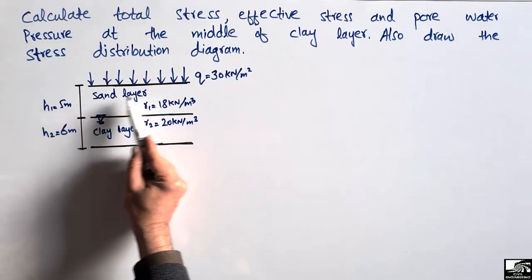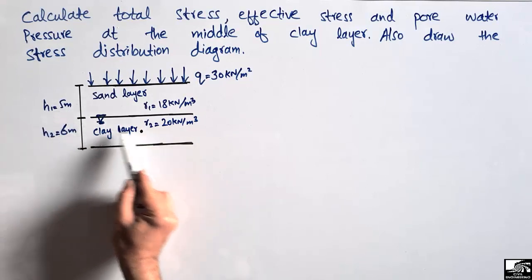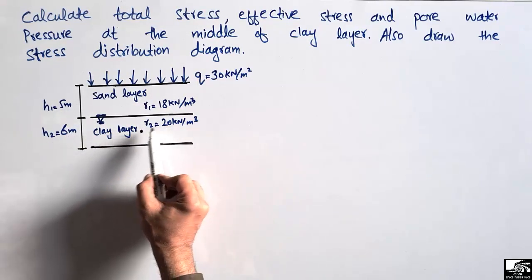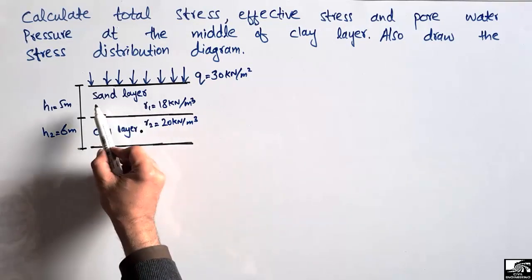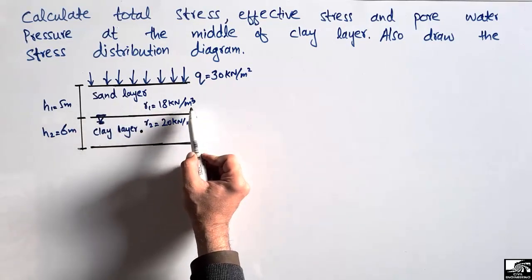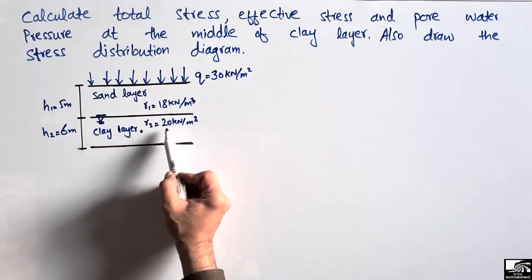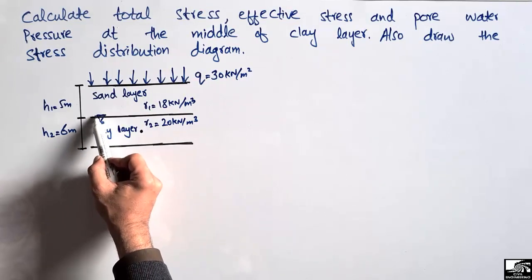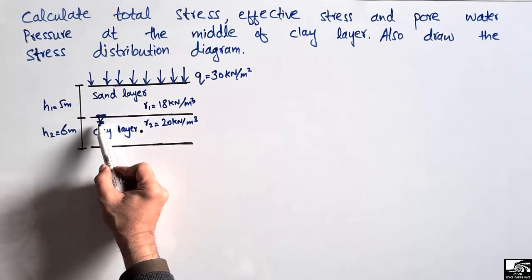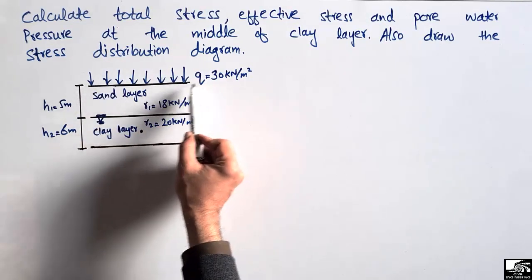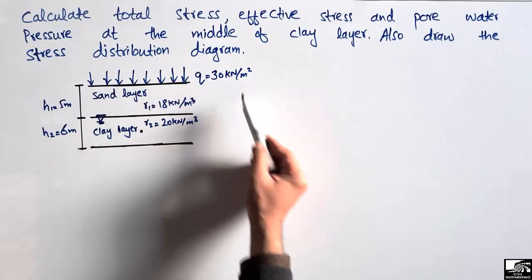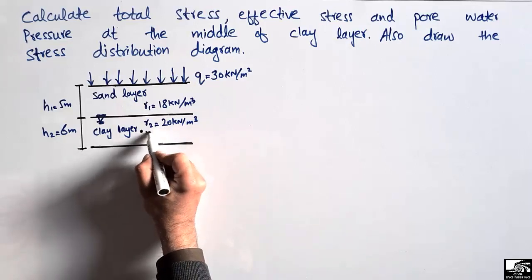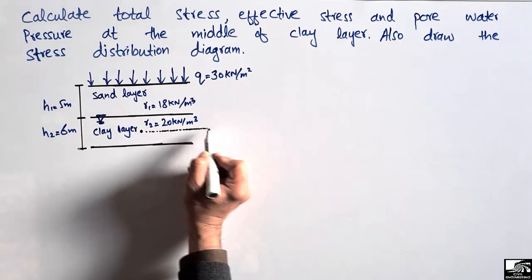The sand layer has a depth of 5 meters and the clay layer has a depth of 6 meters. Gamma 1, the unit weight for the sand layer, is 18 kN/m³, and for the clay it is 20 kN/m³. There is a water table at the bottom of the sand layer. The surcharge load acting on the top of the sand layer is 30 kN/m².